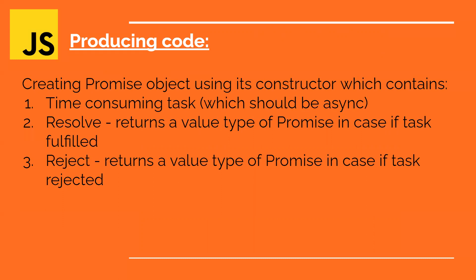Just like normal class objects — when you create objects you might use a constructor function or a class — here we are going to create the promise object. The promise object is created using the new operator followed by the Promise class name, and you pass two parameters. Inside the promise object, it will have the time-consuming task, which should be asynchronous code — wherever you have a time-consuming task, that will go to the background as an asynchronous process.